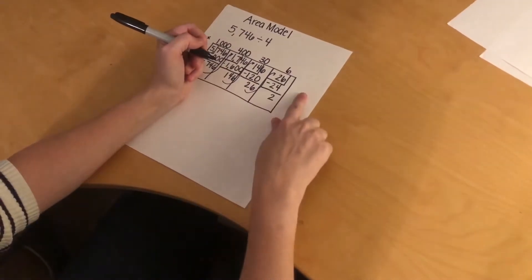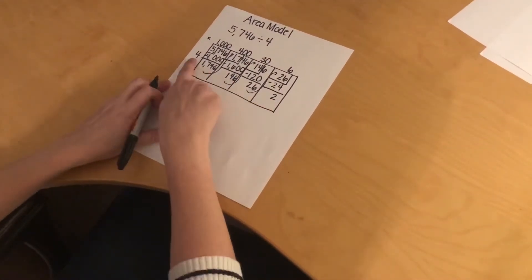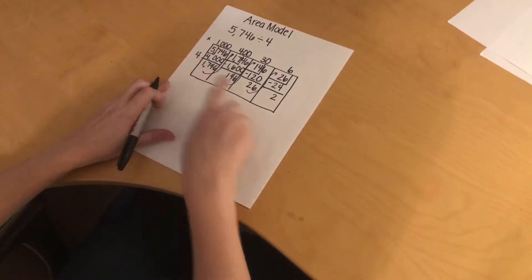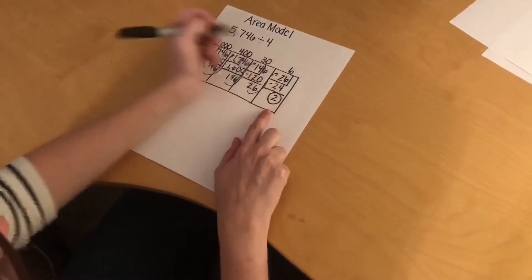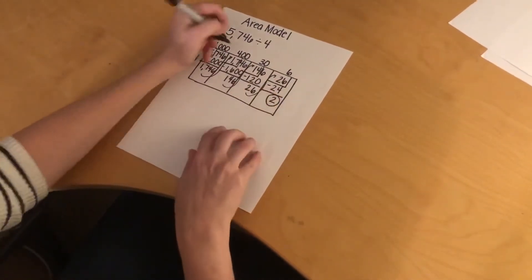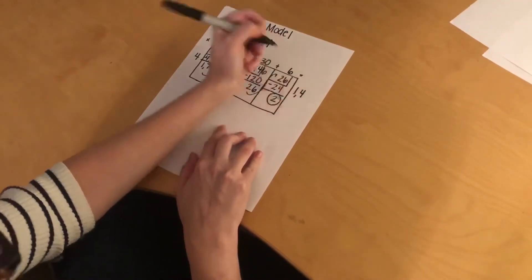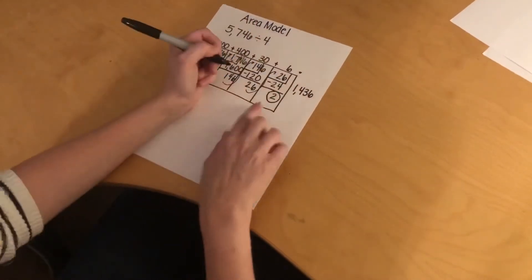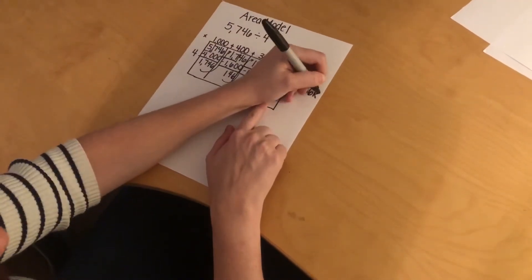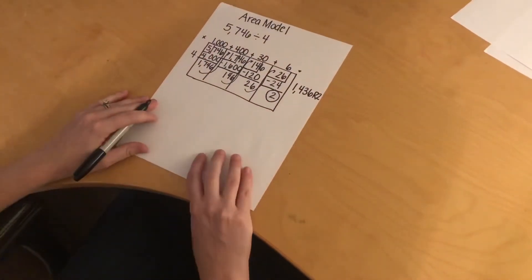I have no more boxes left. This number is less than my divisor, so that means I'm done. This is my remainder. I'm going to add these numbers up top, and I get 1,436 remainder 2. If I'm going to check my answer,